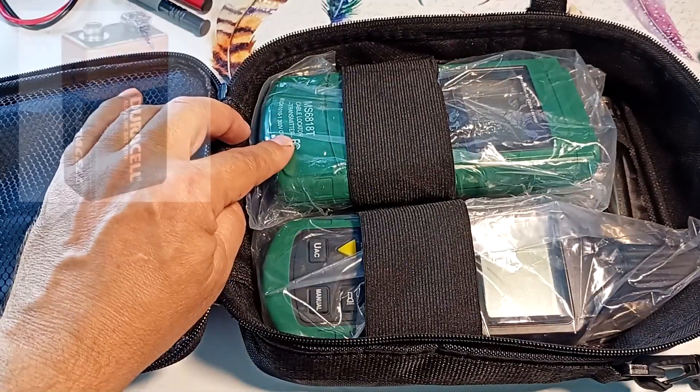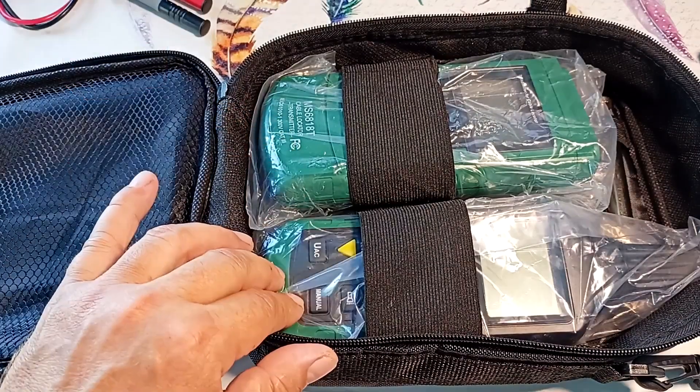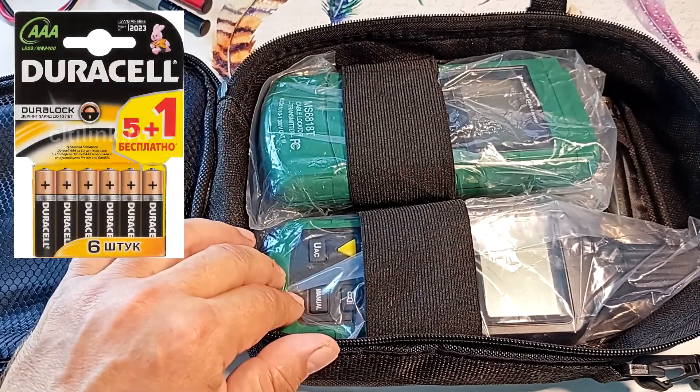The generator contains a crown type battery. And the receiver contains six AAA batteries.